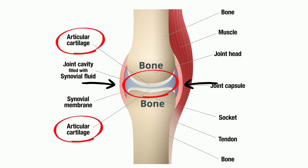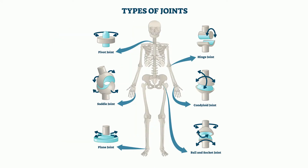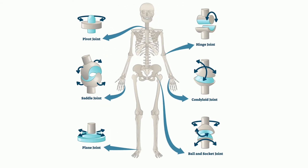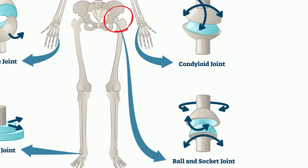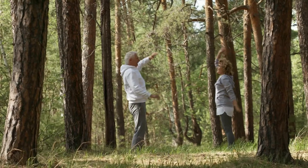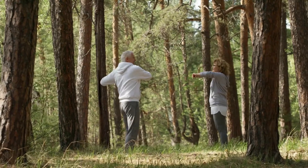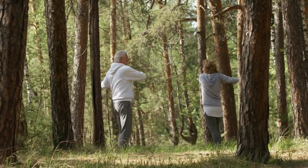Let's take a look at some of the different types of synovial joints that we have in our body. First, you have a ball and socket. They are found at your shoulder and your hips, and they allow for the movement of your shoulders and hips to move up and down and back and forth. They have a great range of motion.